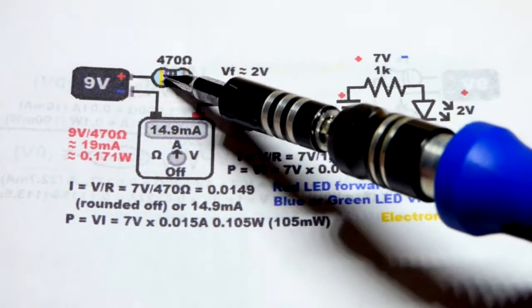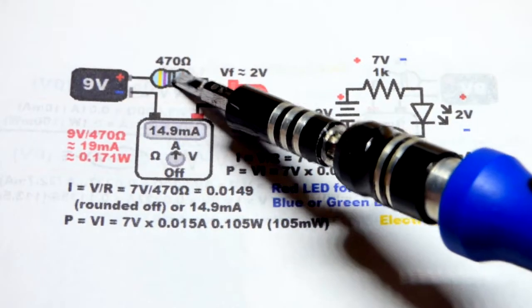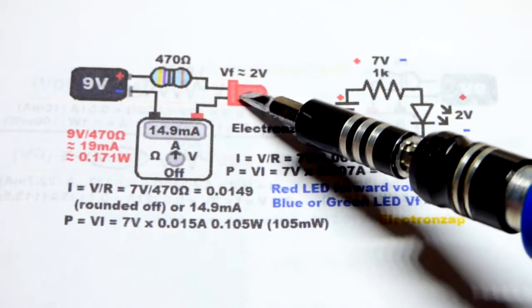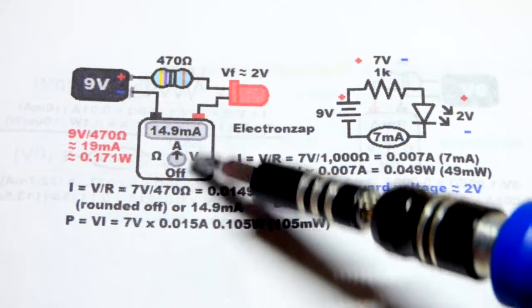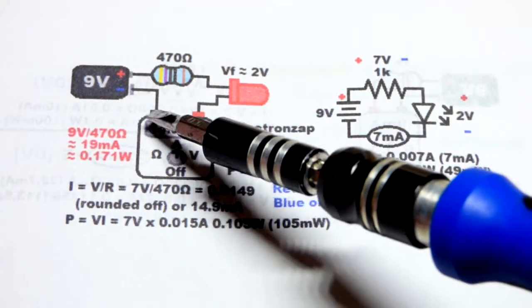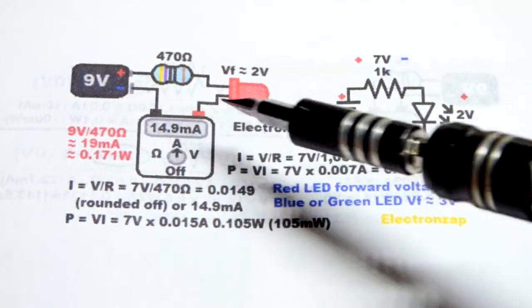In the last video we looked at limiting current from a voltage source with a resistor. Now we're going to add another element, an LED. The meter, if you use a meter to measure current, you put the red probe toward the positive side, black probe toward the negative. If you put them backwards you'll just get a negative number.